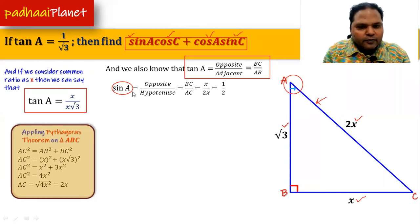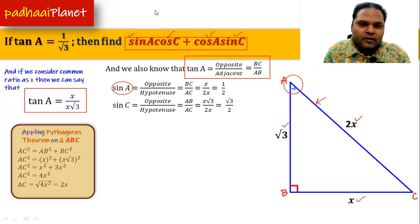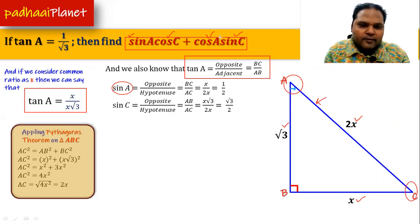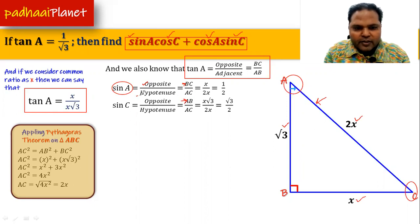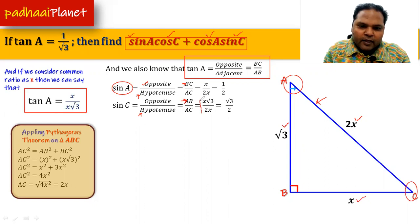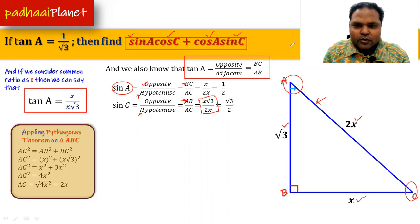Now let's find sin(C). When we consider angle C, the opposite side changes — it is now AB, not BC. The hypotenuse remains the same. So sin(C) = AB over AC = x√3 over 2x = √3/2. That's the value of sin(C).